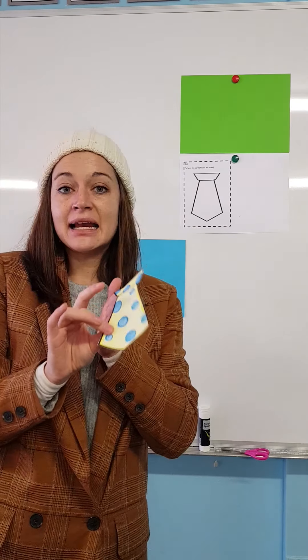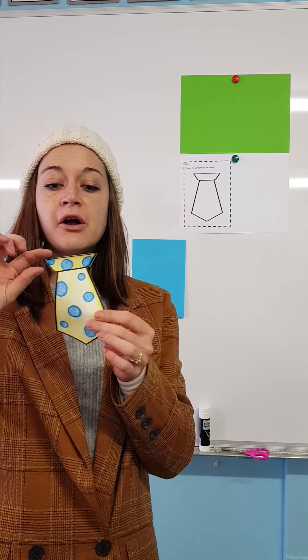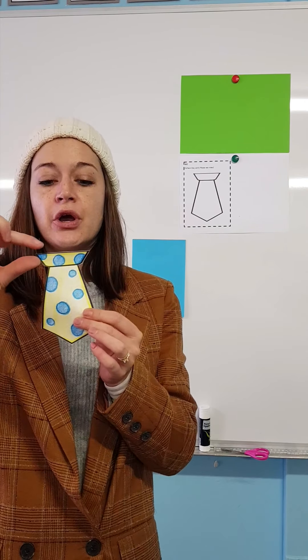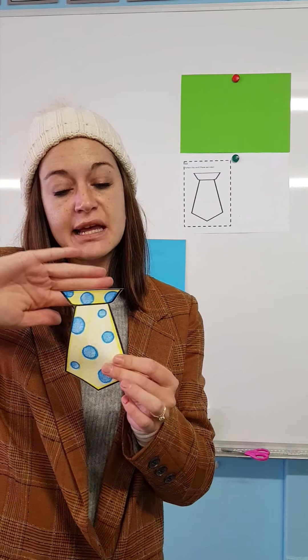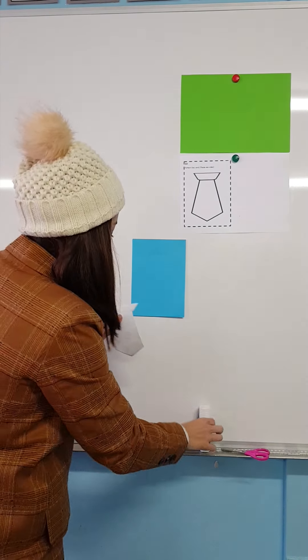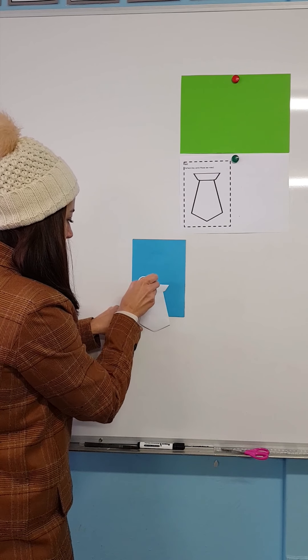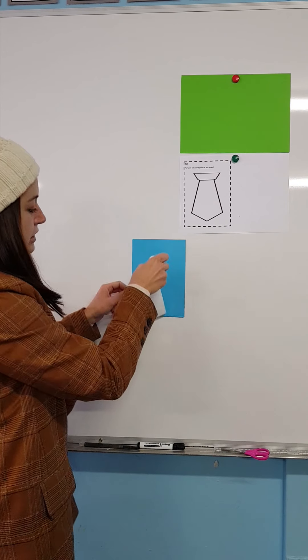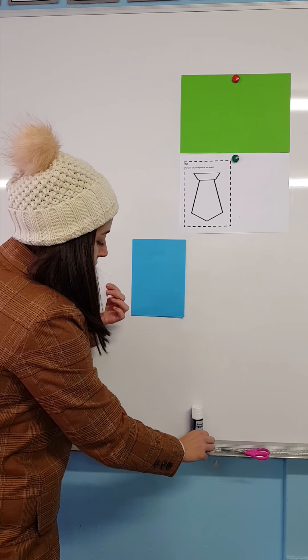You are going to put glue only at the top part of the tie, obviously at the back, but not your whole tie, only at the top part. My glue is only on the top part of my tie. Now I'm going to stick it to my paper.